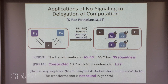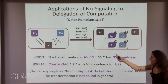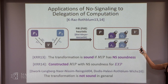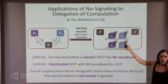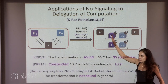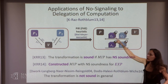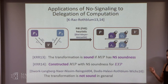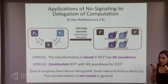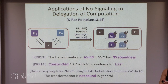When you encrypt something, you can't assume the prover behaves locally. The only thing that encryption buys you is that this prover behaves in a no-signaling manner. This line of work shows that encryption is really very similar to no-signaling — what encryption buys you is essentially that it's no-signaling.